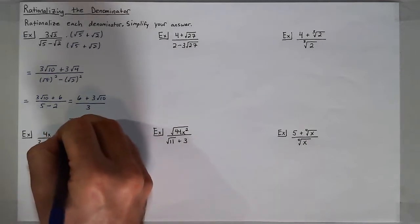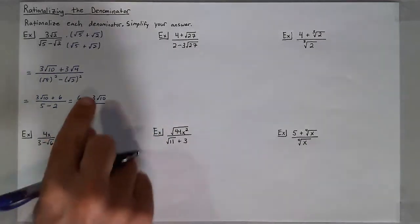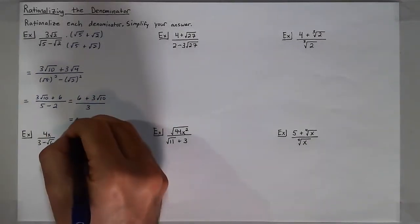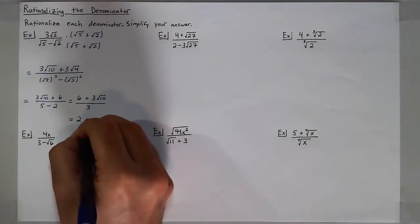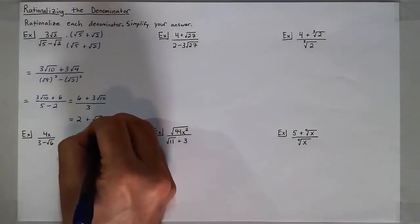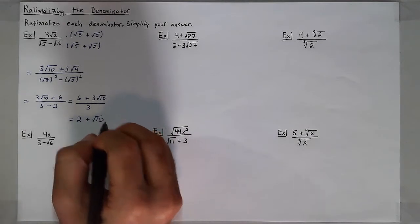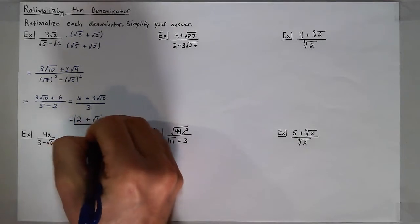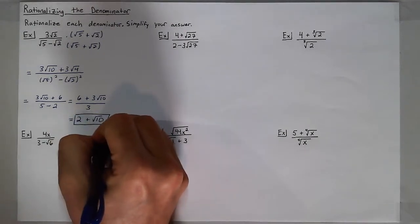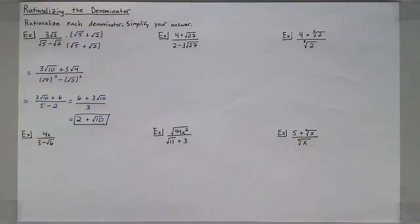I notice that 6 divided by 3 is 2, and 3 square roots of 10 divided by 3 is the square root of 10. So I have 2 plus the square root of 10 when I simplify. There is no more denominator — it is just a radical expression, which rationalizes the denominator to 1.